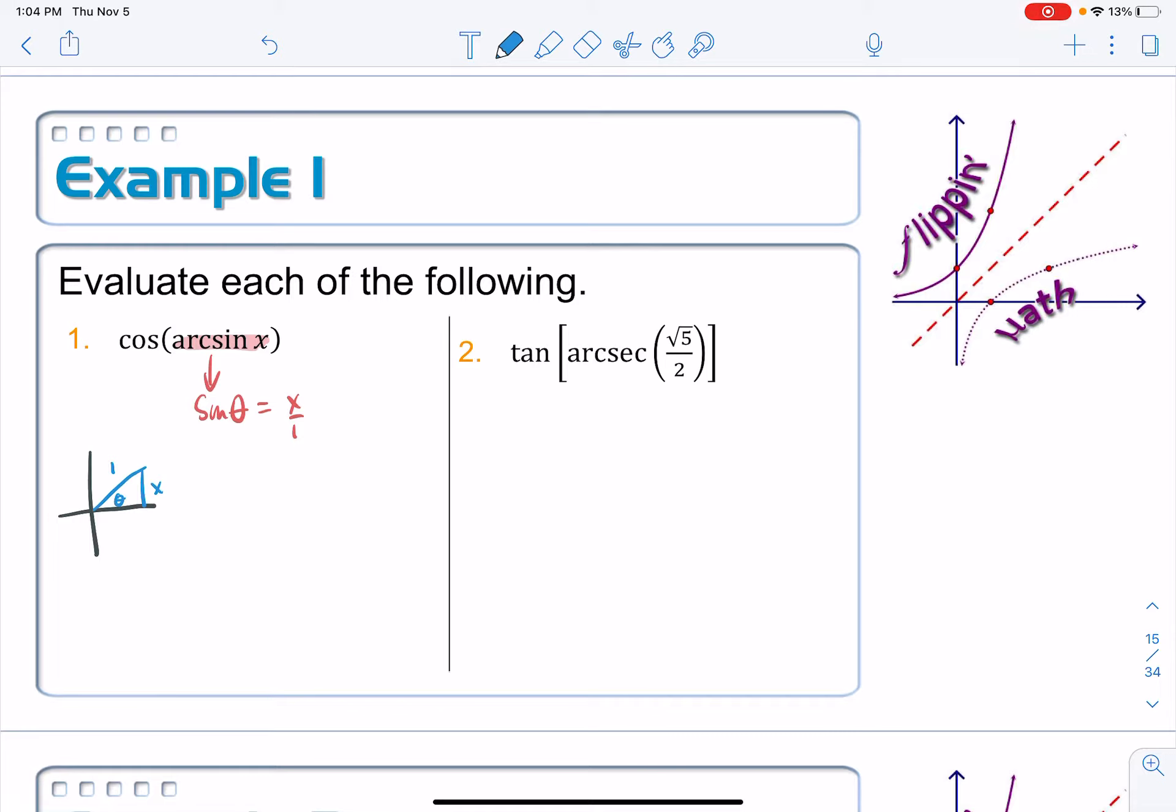Using the Pythagorean theorem to find the length of the adjacent side, it's the square root of 1 minus x squared. Okay, and now I just want the cosine of that. The cosine is the adjacent side, which is the square root of 1 minus x squared,